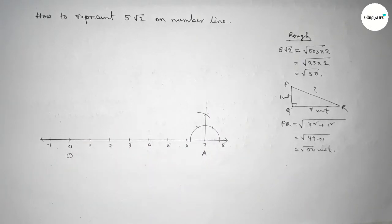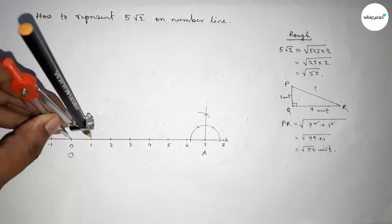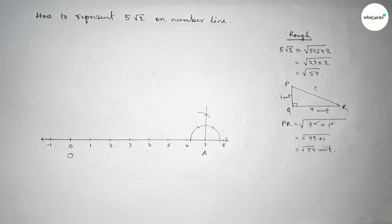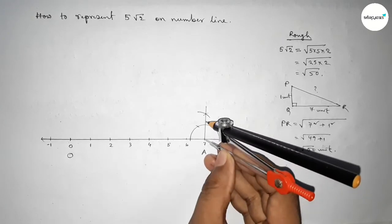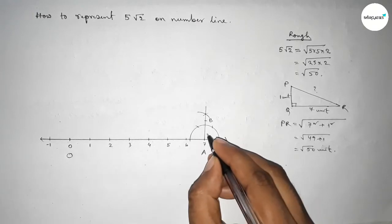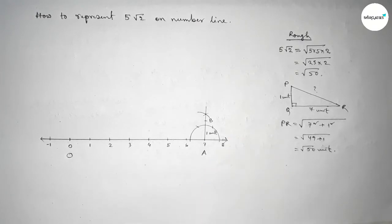Now taking the length 1 unit, so between 0 to 1, and now putting the compass here and marking. So taking here point B and this is 1 unit length.